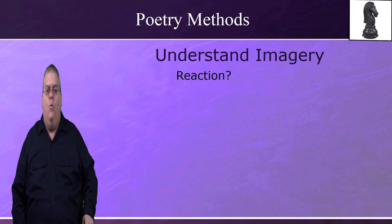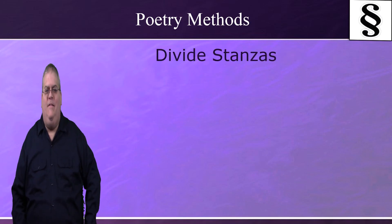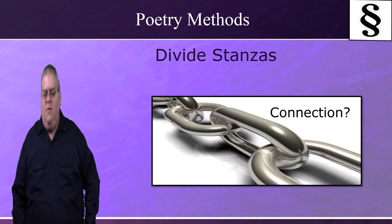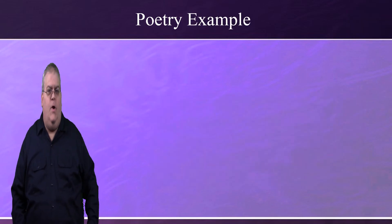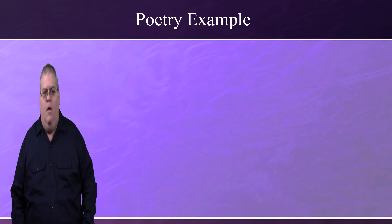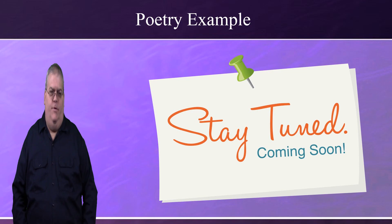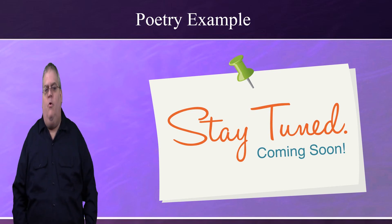Then finally, ask what point the author is trying to make by using this symbol in this context. And finally, divide the poem into stanzas and try to determine the relationship between the stanzas based on their content. I would usually give a brief example to illustrate the tools and methods, but this section is already getting pretty long, and the example I want to give is not very brief. So I'm going to give a demonstration of examining parallelism and imagery by looking at Psalm 1 in a separate supplementary section. If you'd like to see this example worked out, feel free to check it out. But if you feel you already understand how to read biblical poetry well, feel free to skip that section.